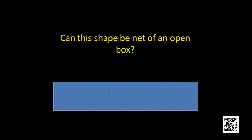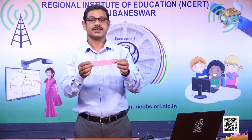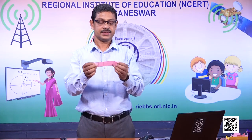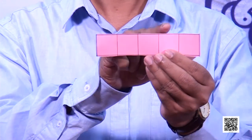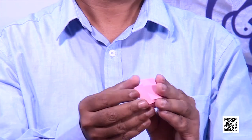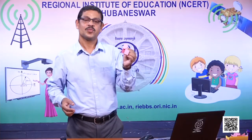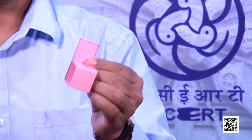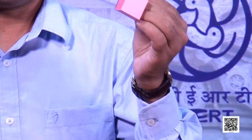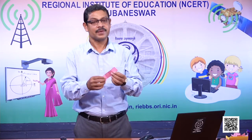Now I am taking another shape. Here also you can find five faces. Whether I am able to fold it into an open box — let us see. There are five faces: one, two, three, four, five. I am folding it. So I cannot fold it into an open box. Though there are five faces, if I fold it I am not getting an open box.